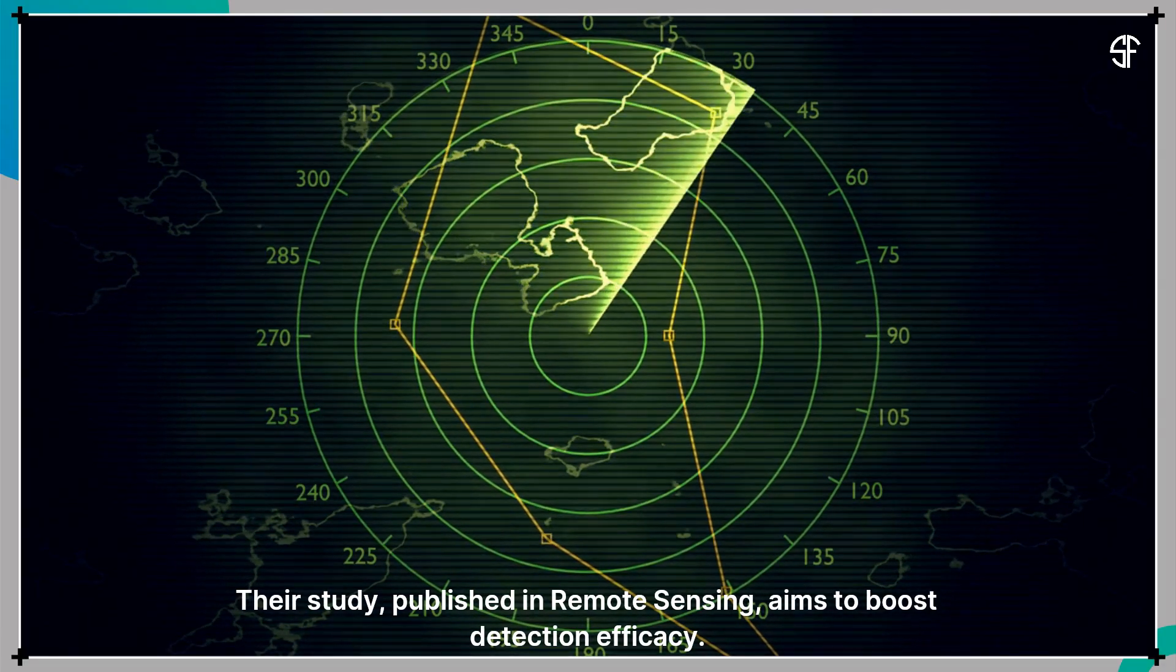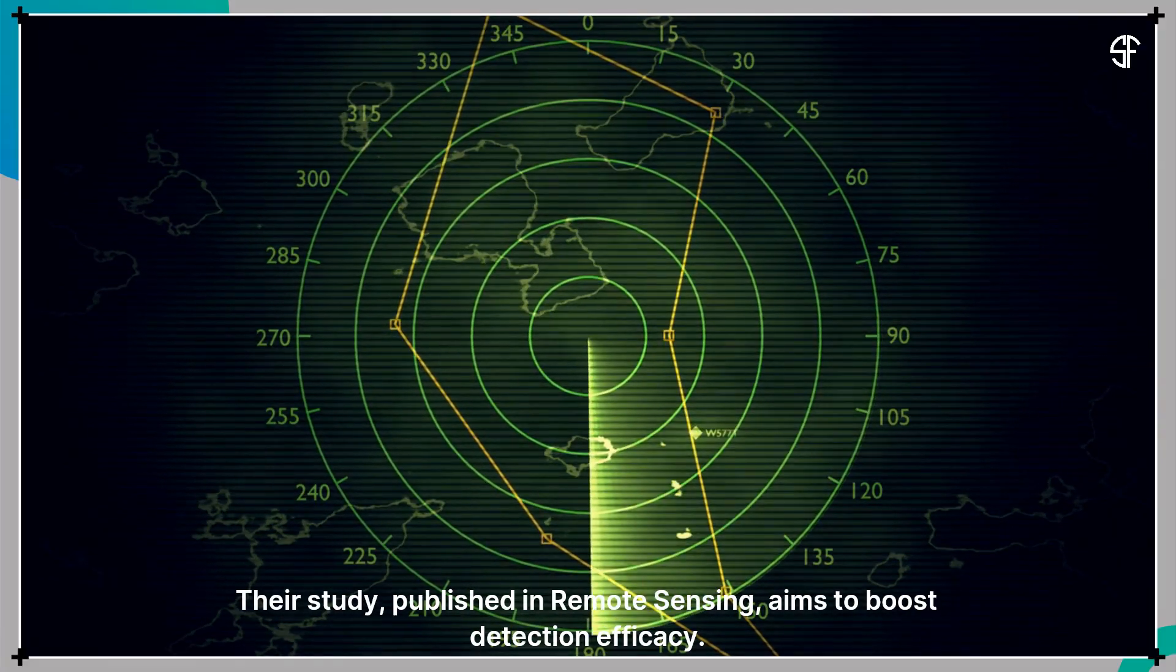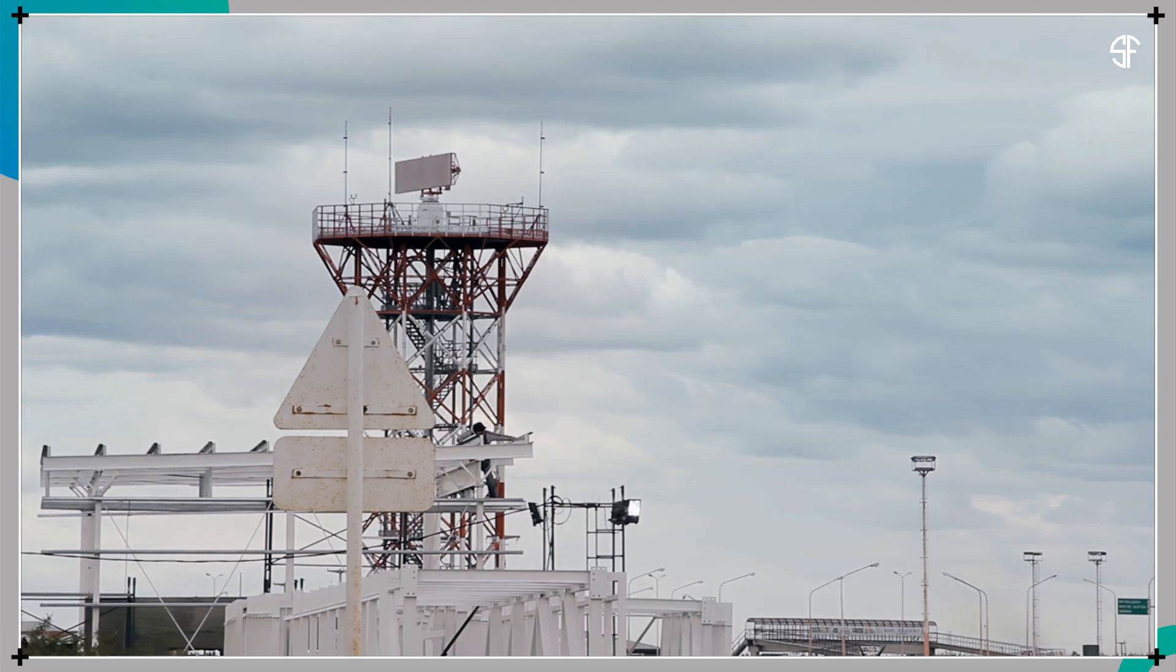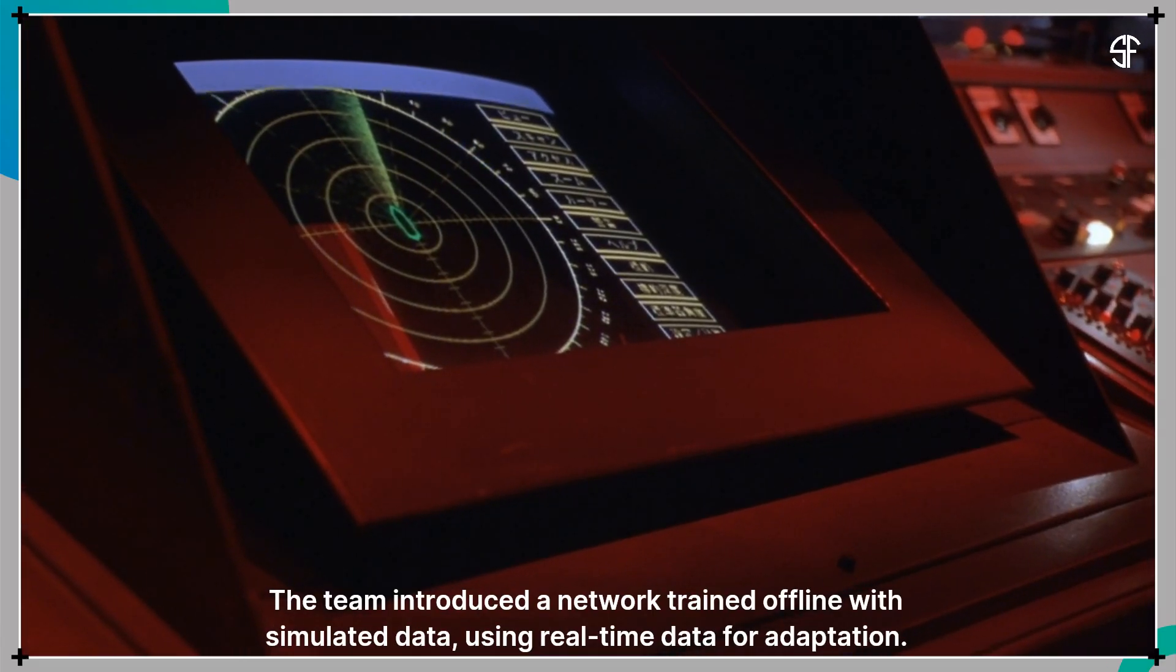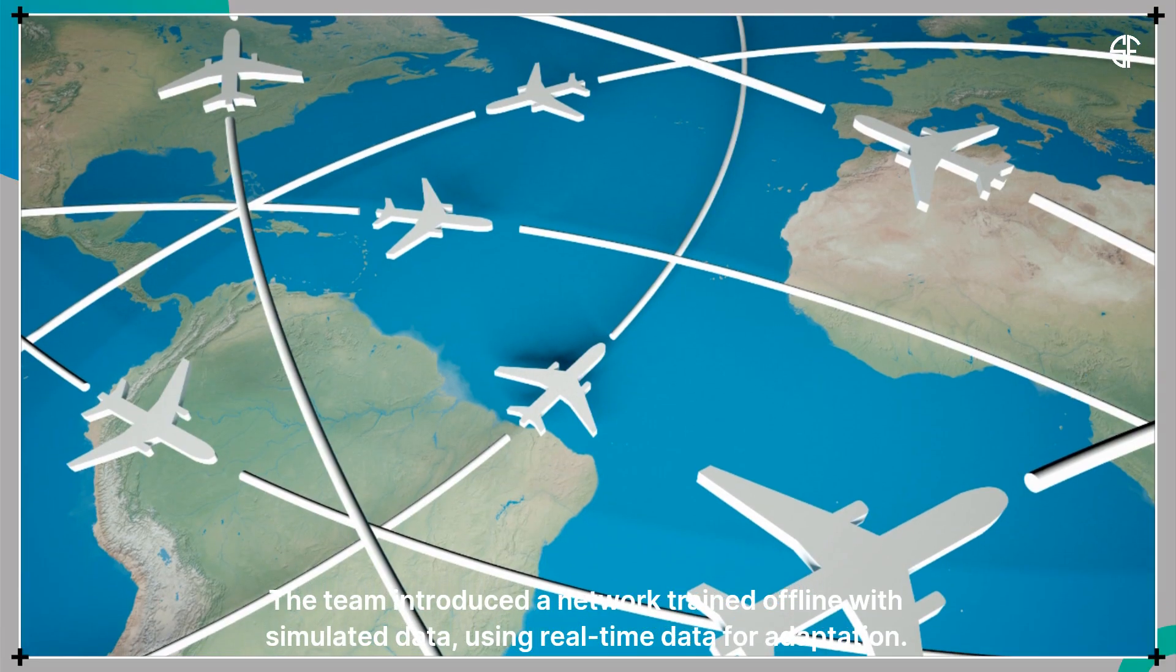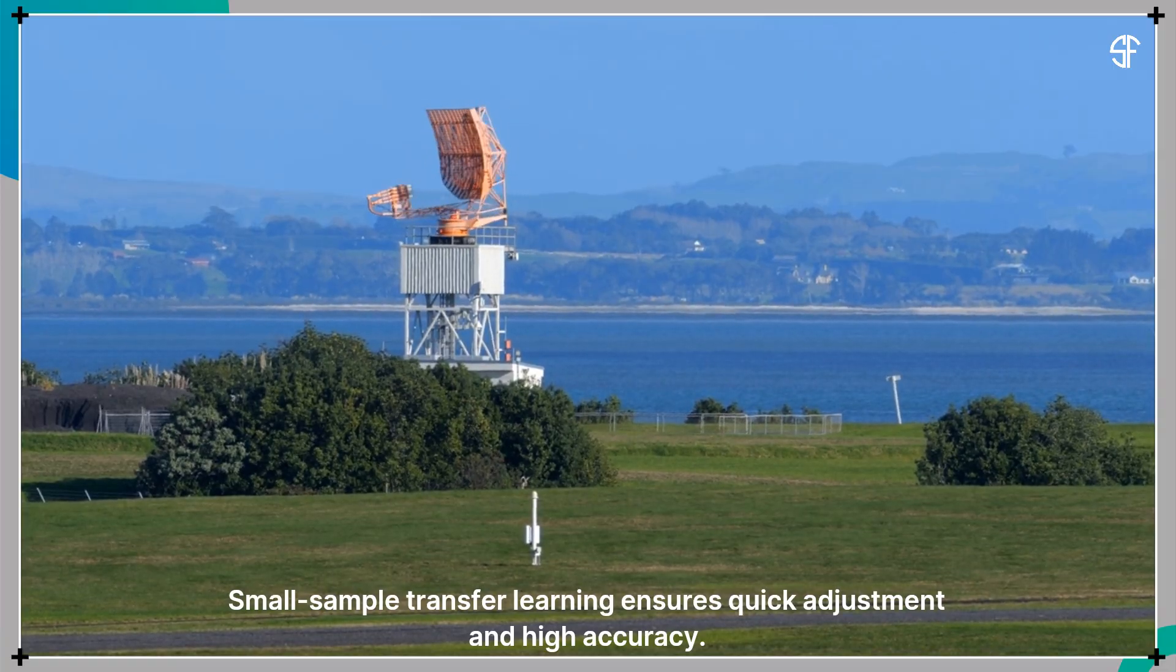Their study, published in Remote Sensing, aims to boost detection efficacy. Traditional radar systems struggle with moving target detection amid strong clutter echoes. The team introduced a network trained offline with simulated data, using real-time data for adaptation. Small sample transfer learning ensures quick adjustment and high accuracy.